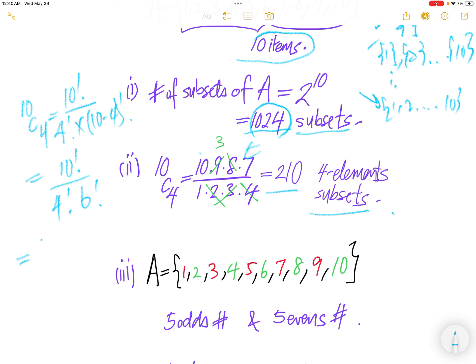10 factorial divided by 4 factorial and then 10 minus 4 is 6 factorial. 10 factorial you can write as 10, 9, 8, 7, followed by 6 factorial, 4 factorial times 6 factorial, 6 factorial cancel. This piece is here.